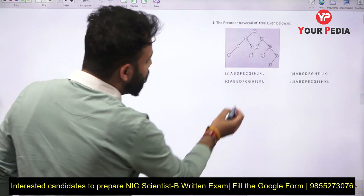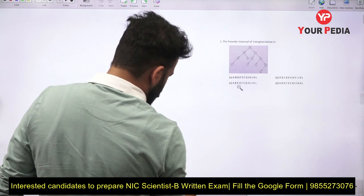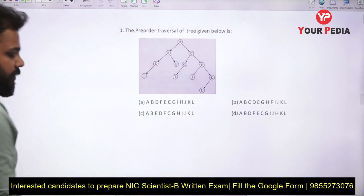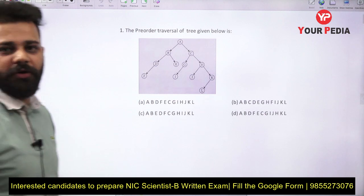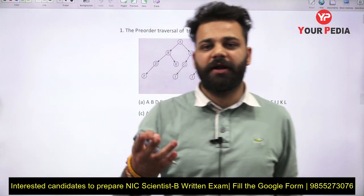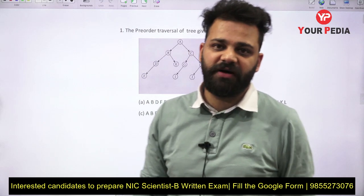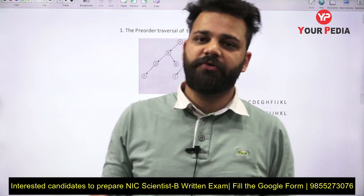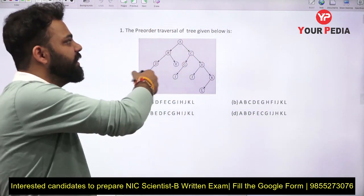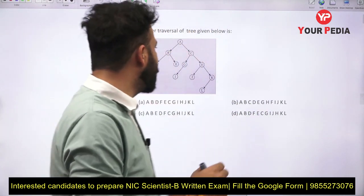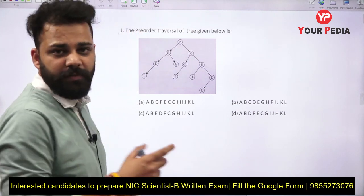The first question is: what will be the pre-order traversal for this tree? For pre-order, it is the order in which functions are called. The order in which functions are executed completely is post-order. We just traverse the tree and the order in which we traverse will be the pre-order.